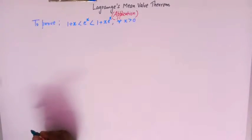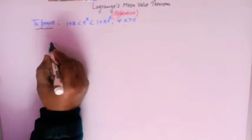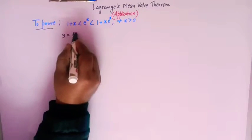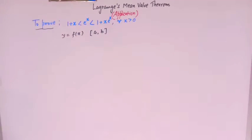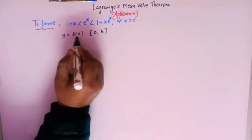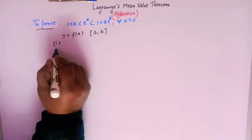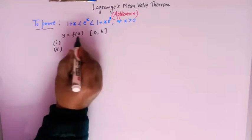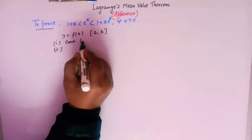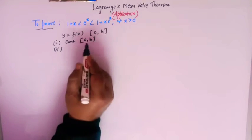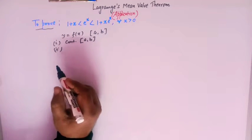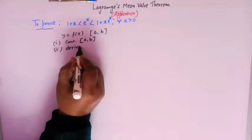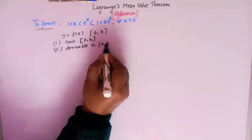Let me first take a quick look at what Lagrange's Mean Value Theorem states. This theorem says that if y = f(x) is a function defined on some interval [a, b], then it should satisfy two conditions. The first condition is that the function should be continuous in the closed interval [a, b], and the second condition is that it should be differentiable in the open interval (a, b).